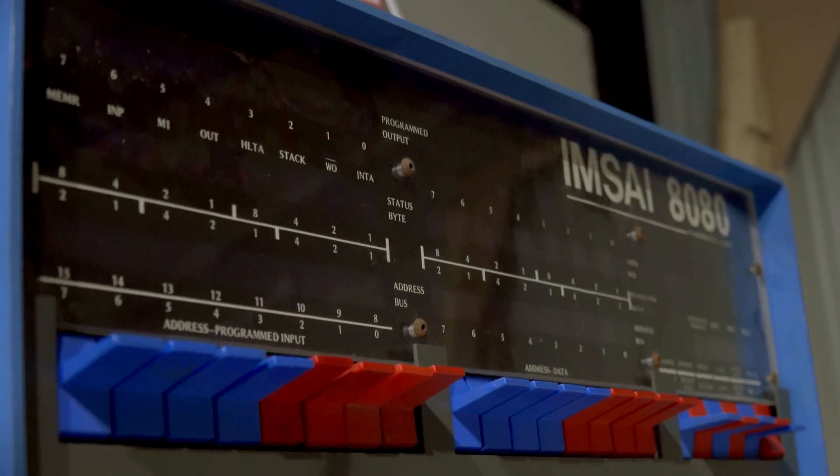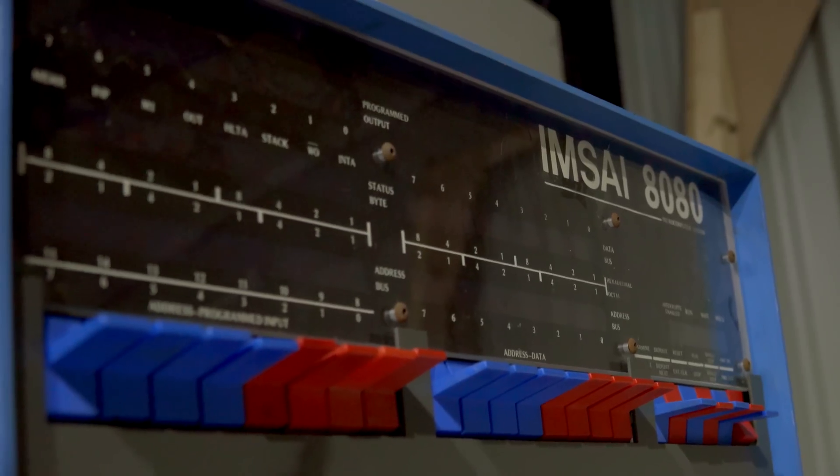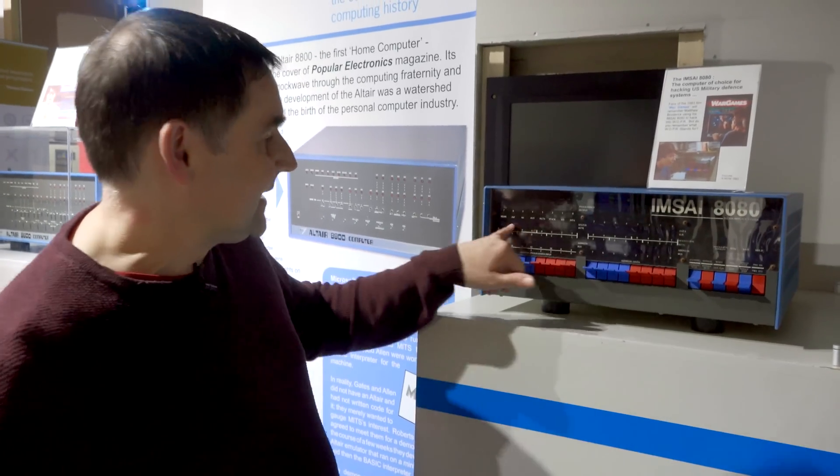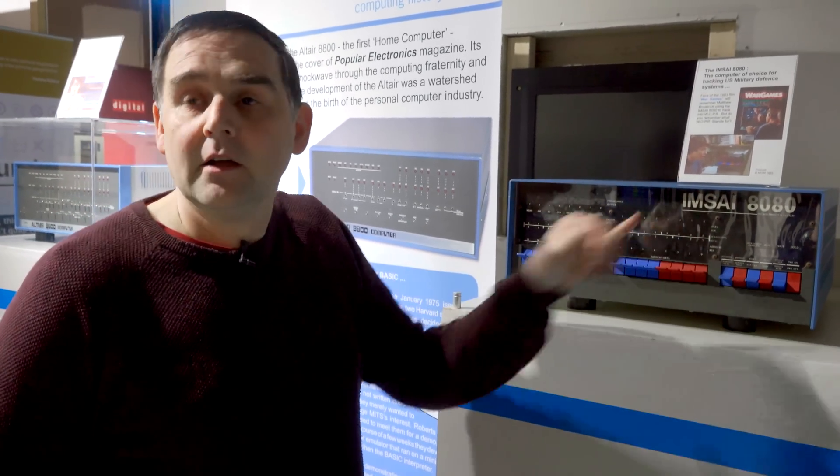They remind me of almost the front of an old VCR. Now I can see some of them say address, some of them say data, some say input, I mean, how would it work? You literally toggle in binary data and the LEDs would light up on the panel there with your binary output from it.